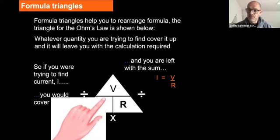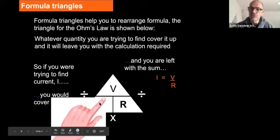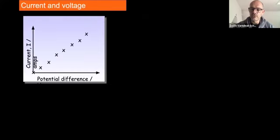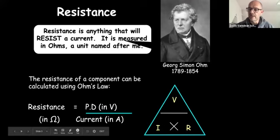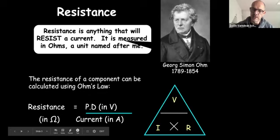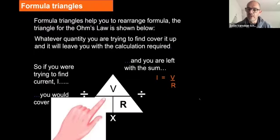When you get a sum and need to work out how to do it, you just cover the thing you're trying to find. For example, if you're trying to find current (symbol I), you cover I — that tells you to divide V by R, so I equals V over R. If you're trying to find R, put your finger over R — that means V divided by I. If you're trying to find V, put your finger over V — that gives you I times R.